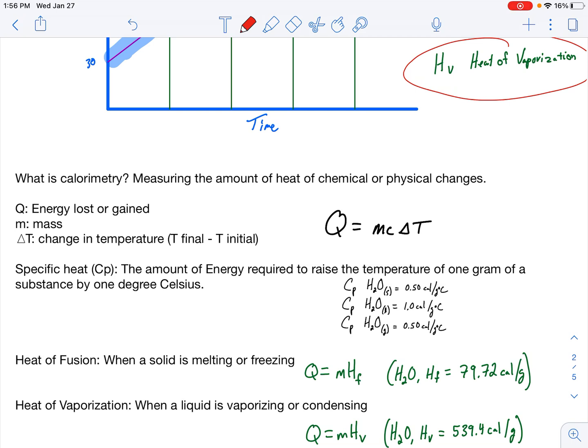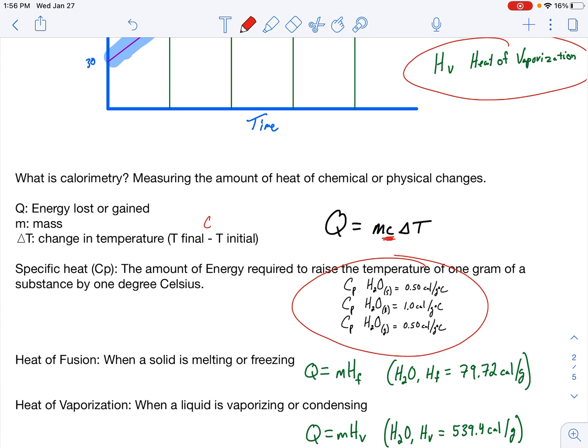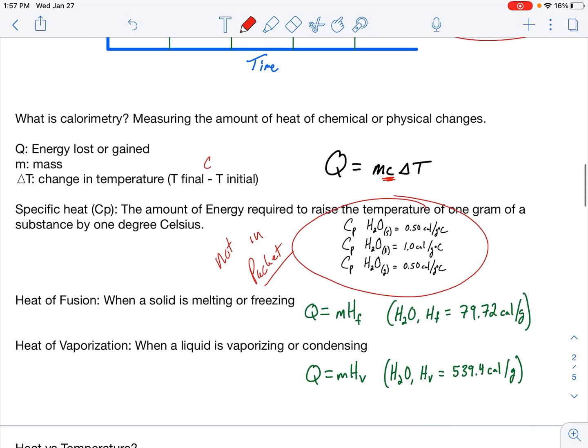Now, Q equals mc delta t. You've seen that before. Q is the actual energy lost or gained. M is mass. Delta t is the change of temperature, temperature final minus temperature initial. We're going to be dealing with Celsius here. For the c value, that's the specific heat, the amount of energy required to raise the temperature of one gram of a substance by one degree Celsius. These are the specific heats for water. Notice how there's more than one. So it's dependent upon its state of matter. The solid and gaseous specific heat are slightly different, but I'm just going to make them the same value for your own convenience because these are not in your packet. So you're going to have to memorize them.